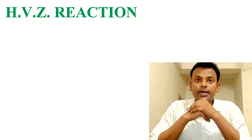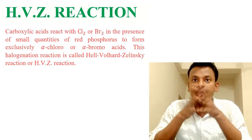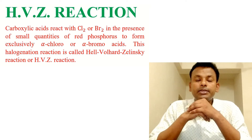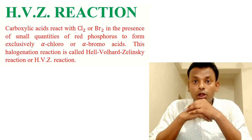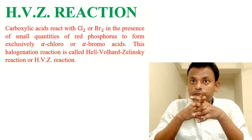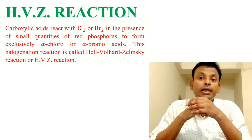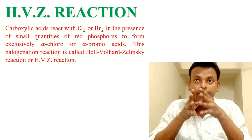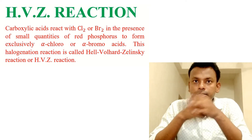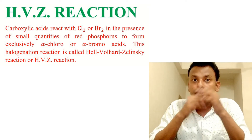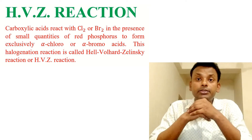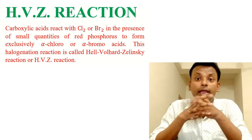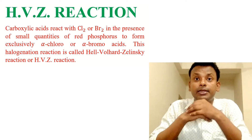HVZ reaction: carboxylic acid reacts with chlorine or bromine in the presence of a small quantity of red phosphorus to form exclusively alpha-chloro or alpha-bromo acid. This halogenation reaction is called the Hell-Volhard-Zelinsky reaction, or HVZ reaction.